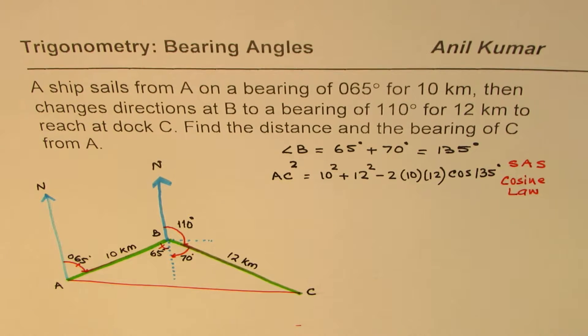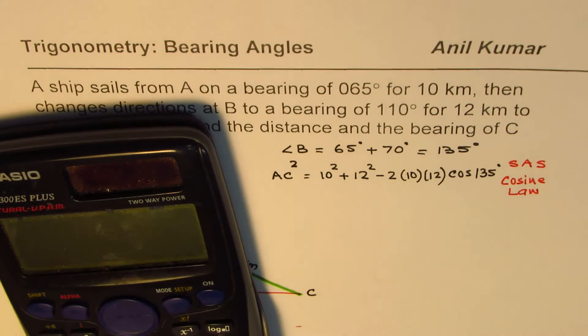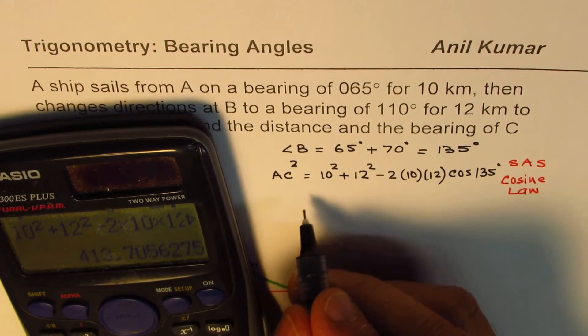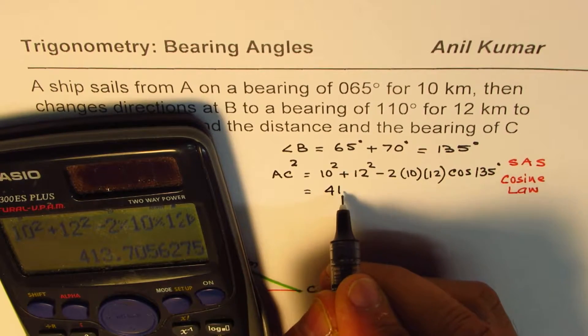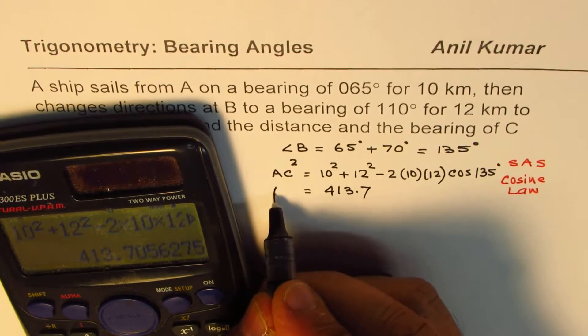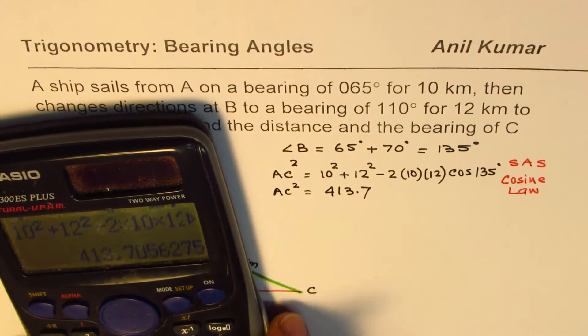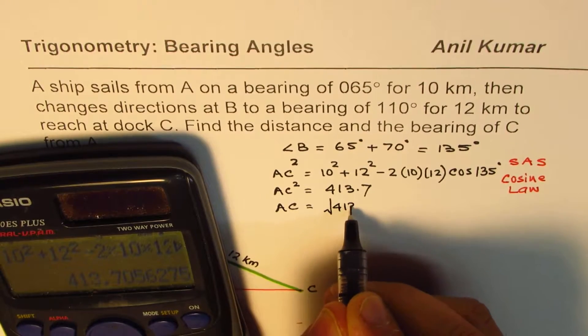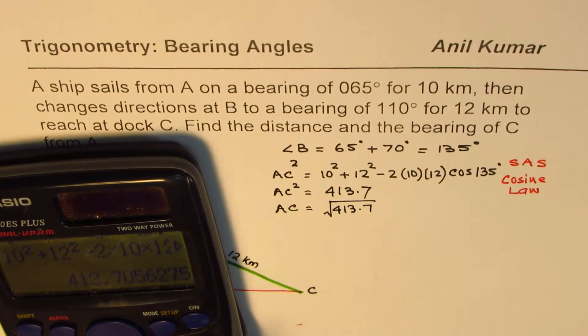So we just applied the formula for the given situation. Now we can actually calculate this value. So it is 10 square plus 12 square minus 2 times 10 times 12 times cos of 135 and that gives you 413.7. So that is what we get. This is AC square. So what is AC equals to? AC is square root of this. So AC is square root of 413.7.